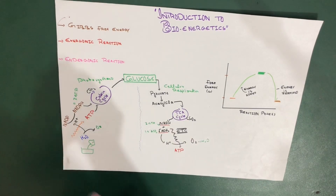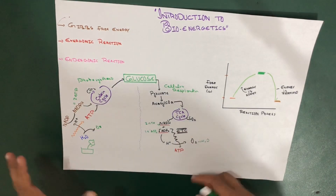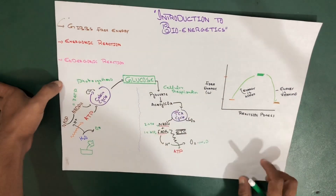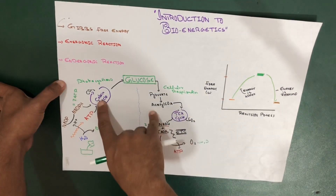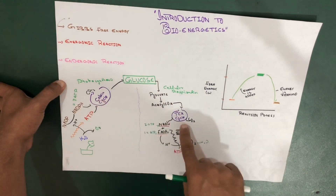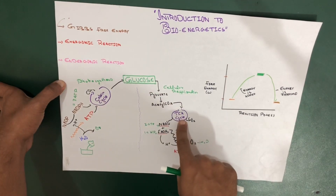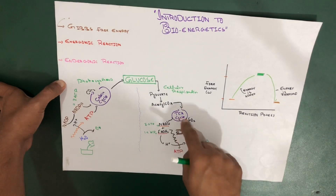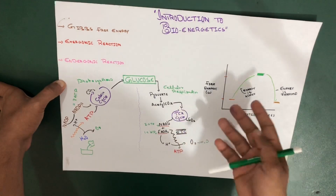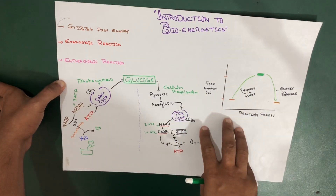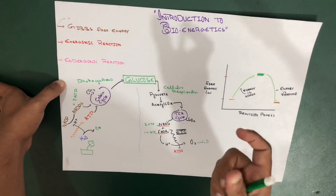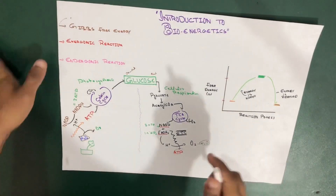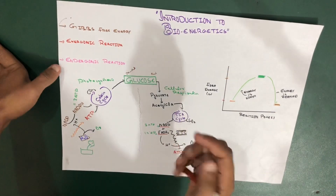So this is a very easy concept: here we have photosynthesis and here we have cellular respiration. Photosynthesis has the Calvin cycle, and cellular respiration has the TCA cycle — also called the Krebs cycle. Let's match up a few things between them.